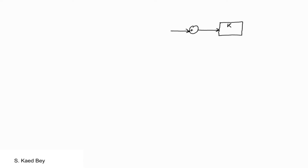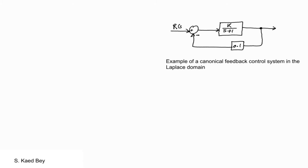So if you have a dynamic system that can be represented entirely by a block diagram, then the overall transfer function of the system can be determined, and you can arrive at a particular configuration. This resulting configuration will be discussed later using the block diagram reduction techniques, and this is called the canonical form of a feedback control system.